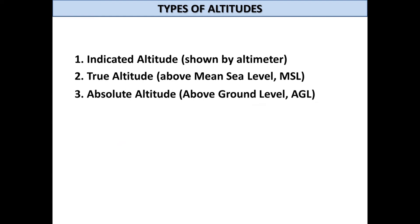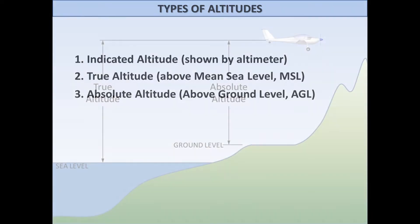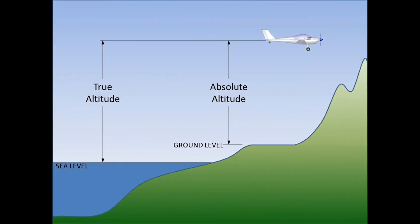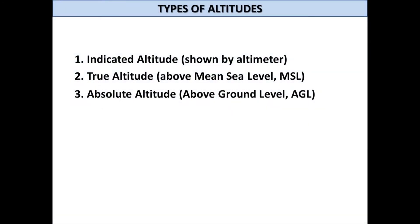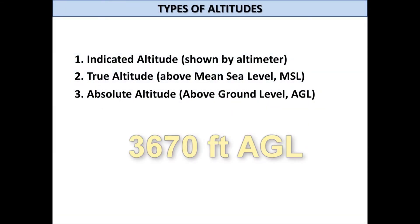Absolute altitude is the vertical distance between the aircraft and ground level. Absolute altitudes are typically followed by AGL, for above ground level; for instance, 3,670 feet AGL.